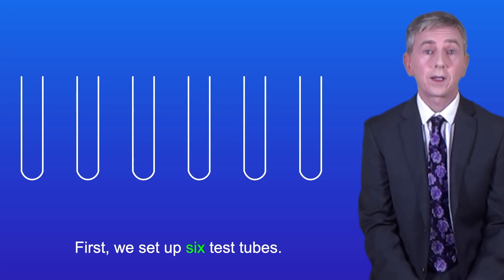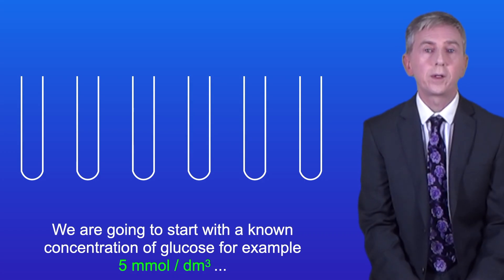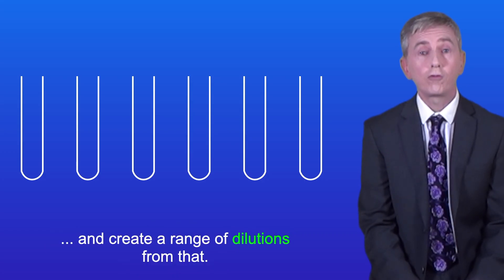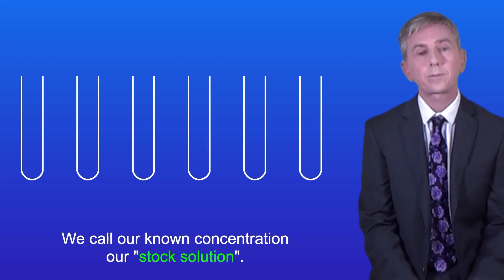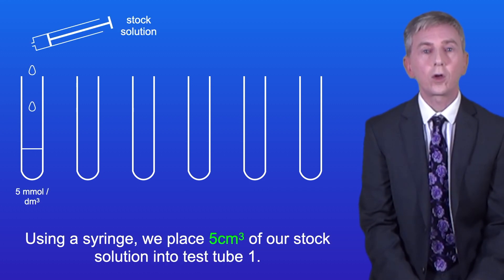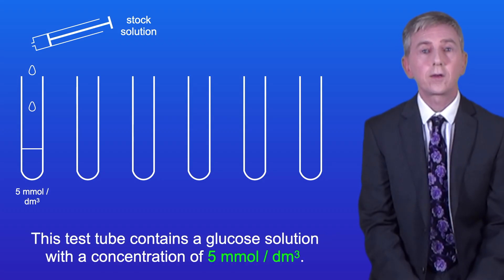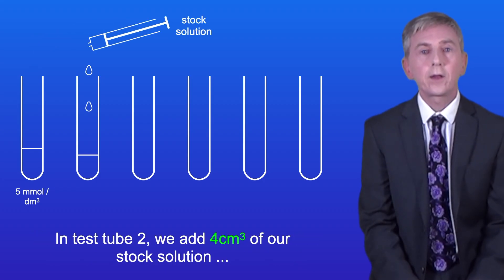First we set up six test tubes. We're going to start with a known concentration of glucose — for example, 5 millimoles per decimeter cubed — and create a range of dilutions from that. We call our known concentration our stock solution. Using a syringe, we place 5 centimeters cubed of our stock solution into test tube 1, which contains a glucose solution with a concentration of 5 millimoles per decimeter cubed.